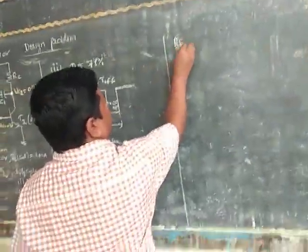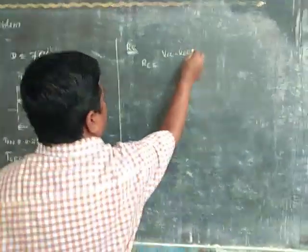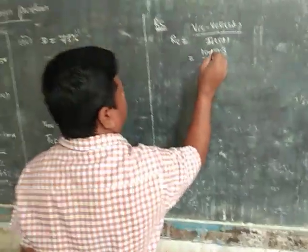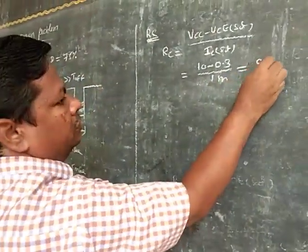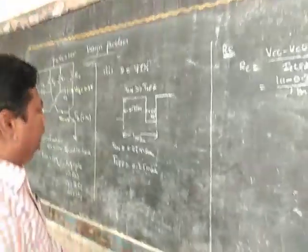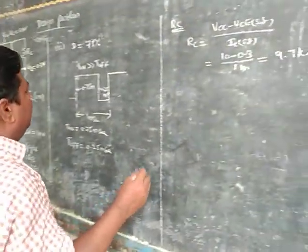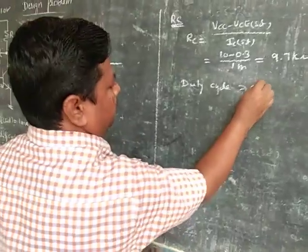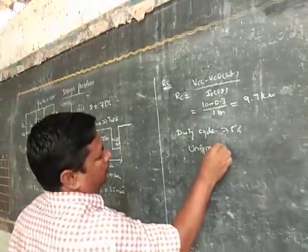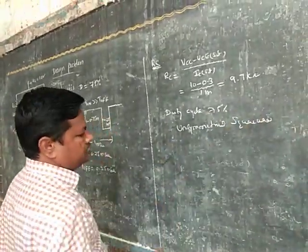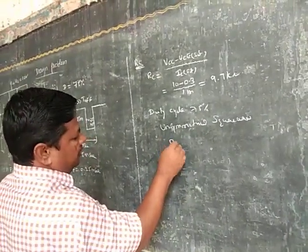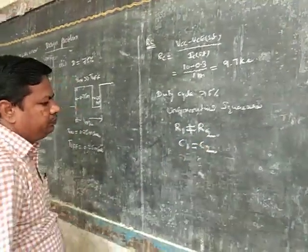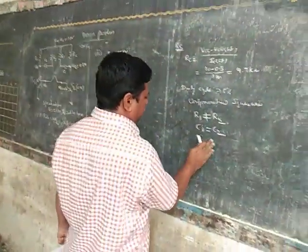Coming to the design: first, RC — same as previous — RC is equal to VCC minus VCE saturation divided by IC saturation, which is (10 minus 0.3) divided by 1 milliampere, equal to 9.7 kilo ohms. For the resistor values: the given duty cycle is 75%, an unsymmetrical square wave. Unsymmetrical square wave means at least one parameter is not the same — R1 not equal to R2. We may choose C1 equal to C2 equal to C.